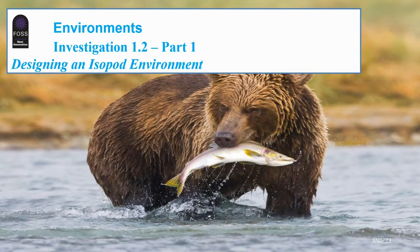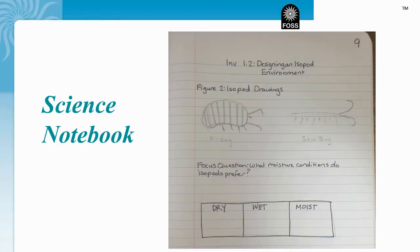Please turn to Investigation 1.2 page in your science notebook. In your science notebook, you should have written the focus question: what moisture conditions do isopods prefer? If you haven't written the focus question in your science notebook, please do so now.